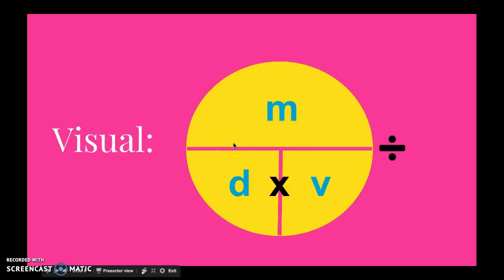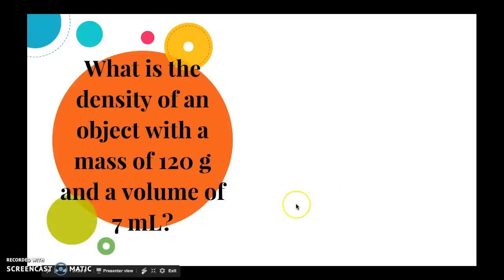If you're using this visual, usually if you want to rearrange the equation, you also will just cover up the one that you're looking for. So say it says what is the density of, you cover up the D and it says that the equation is going to be mass divided by volume. If you're looking for volume, the equation would be mass divided by density. If you're looking for mass, the equation would be density times volume.